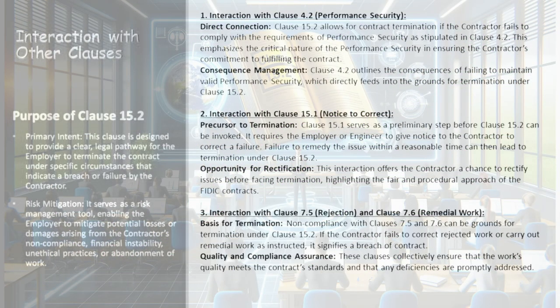In the context of Clause 15.2 in the FIDIC Yellow Book, its interactions with other clauses are pivotal for a holistic understanding of contract management. Interaction with Clause 4.2 — Performance Security: Clause 15.2 incorporates a provision for termination if the contractor fails to meet performance security requirements as set in Clause 4.2, underscoring the importance of performance security in guaranteeing the contractor's commitment. The implications of not maintaining valid performance security directly contribute to conditions that can initiate termination under Clause 15.2.